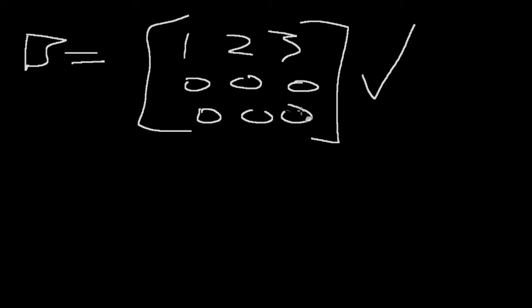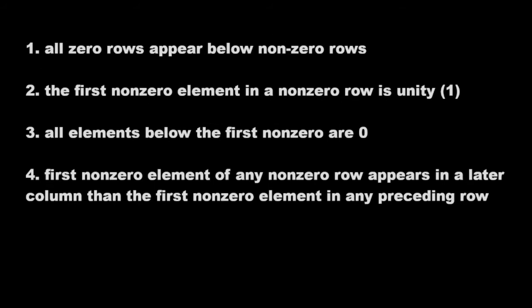But, quick example here. Let's say there was a one right here. Then, in that case, it would be an X, because this zero row is above it. If this zero row were below it, then it would work. But since it's not, then it breaks one of the rules. It breaks the first rule.